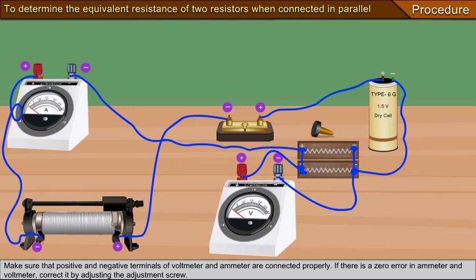If there is a zero error in ammeter and voltmeter, correct it by adjusting the adjustment screw.